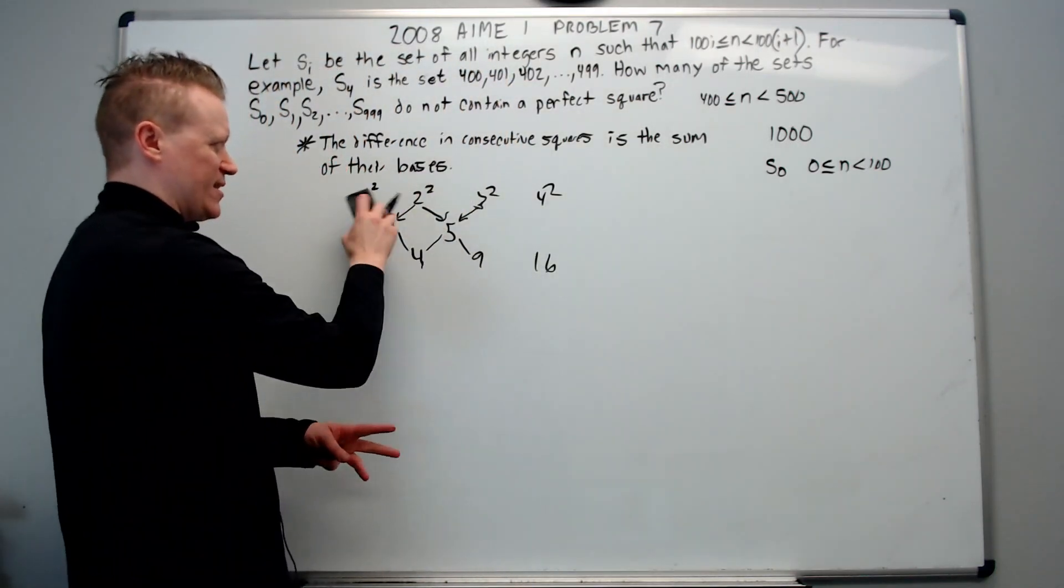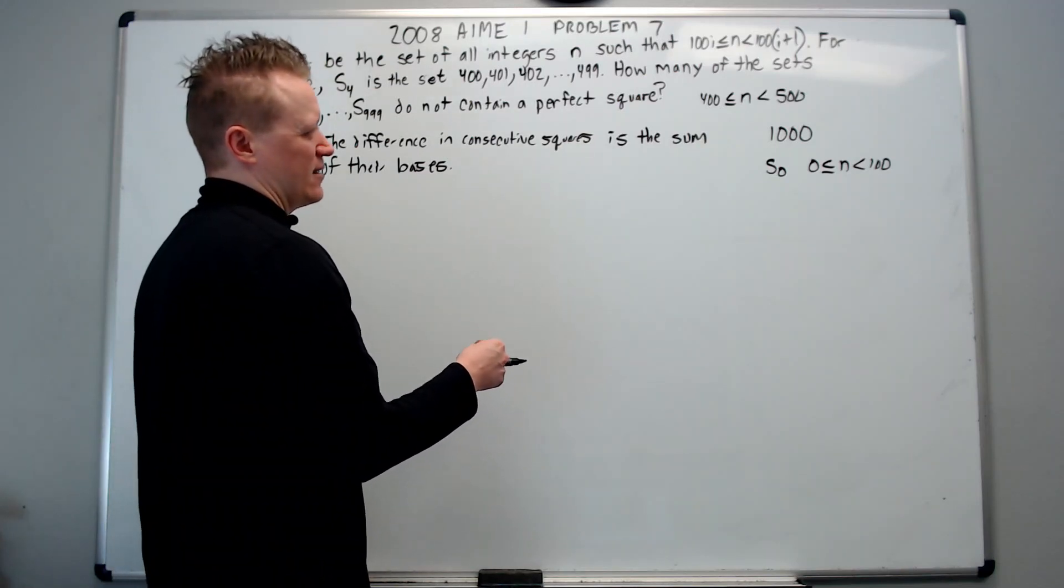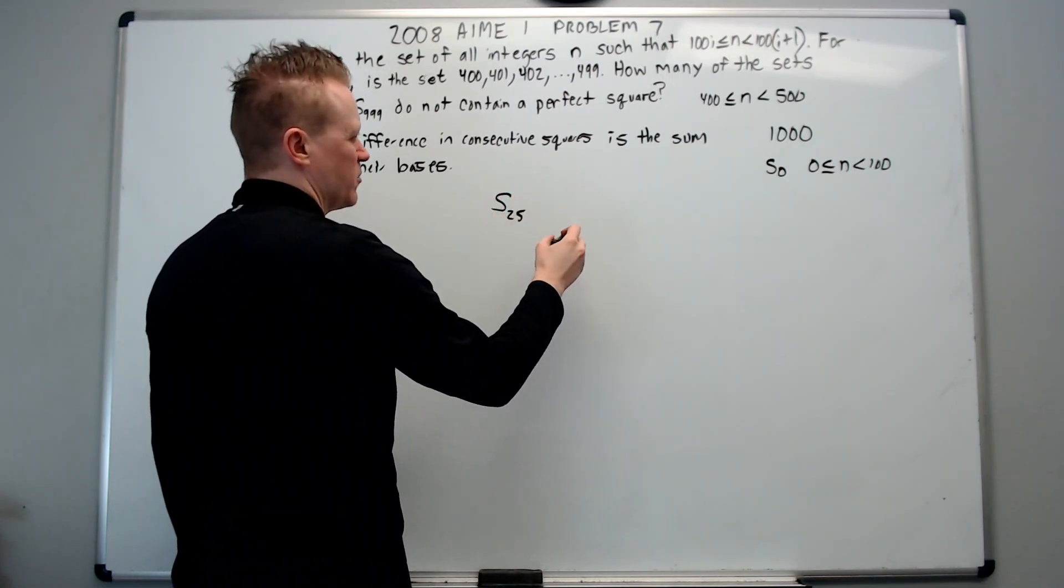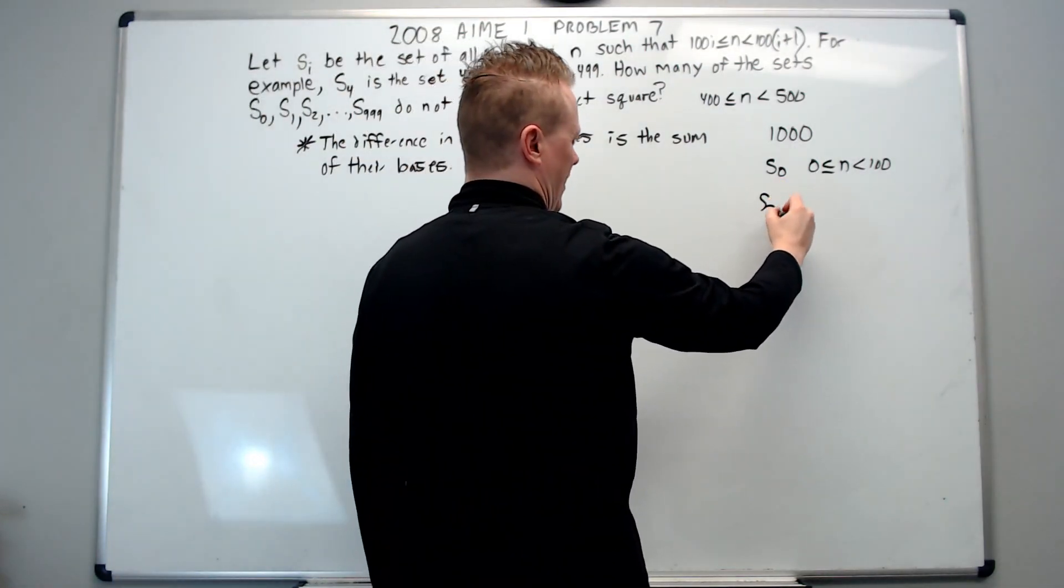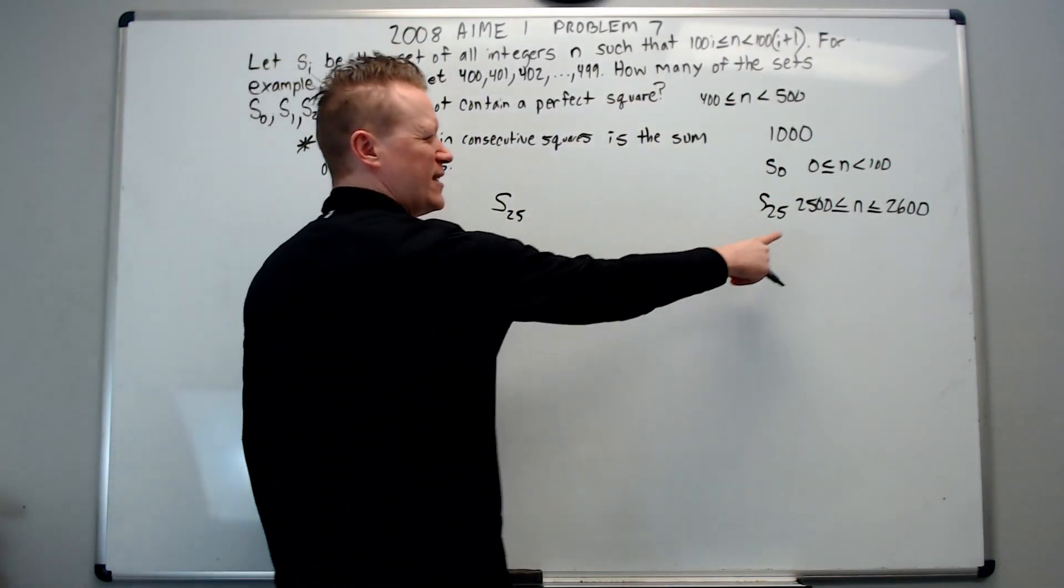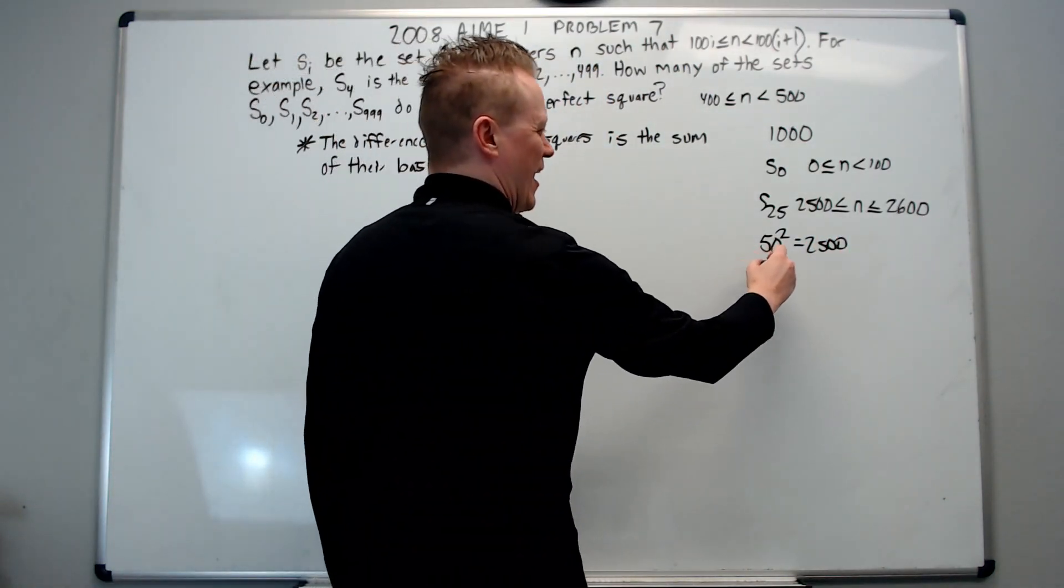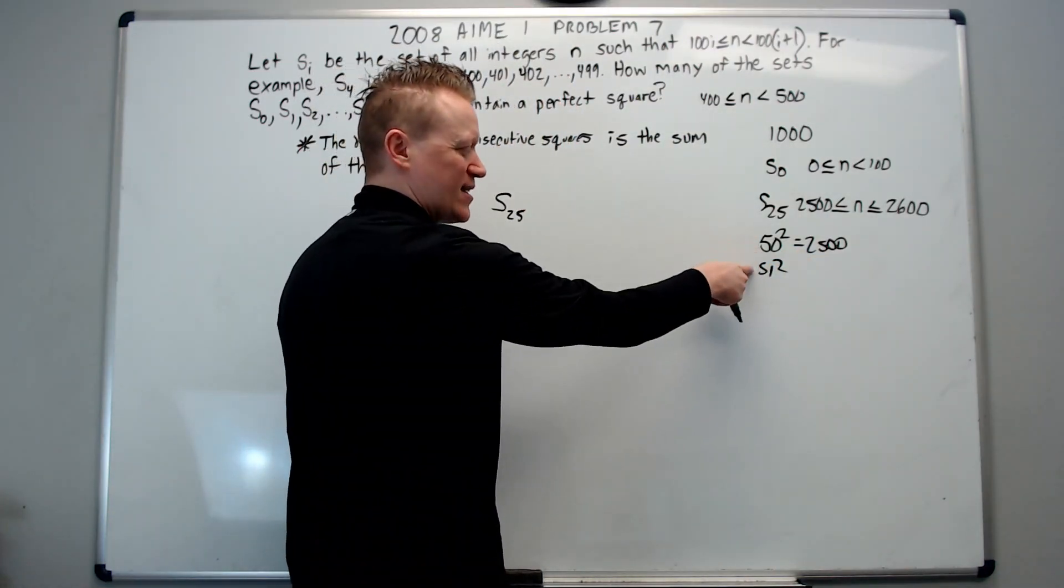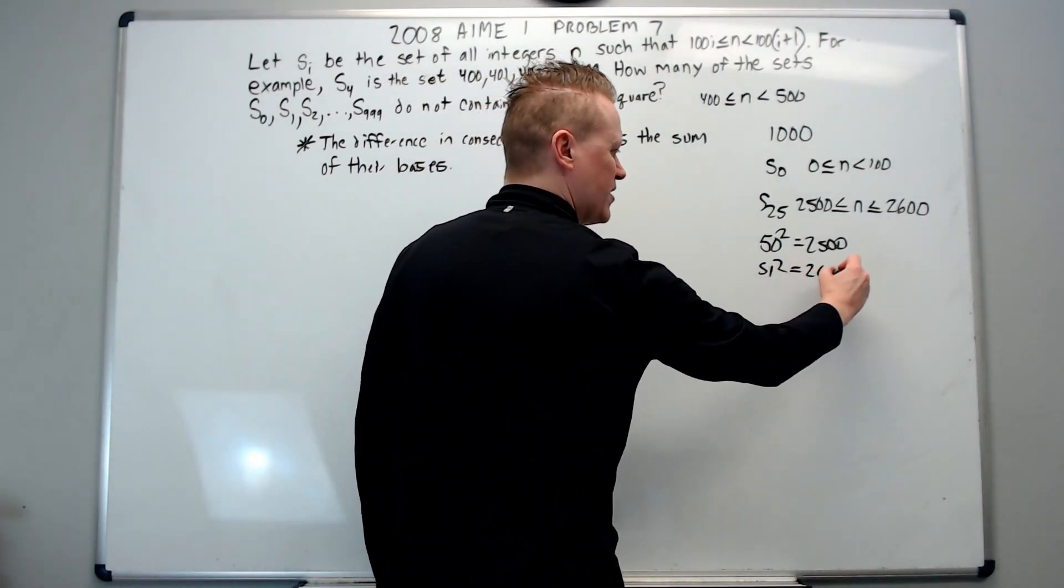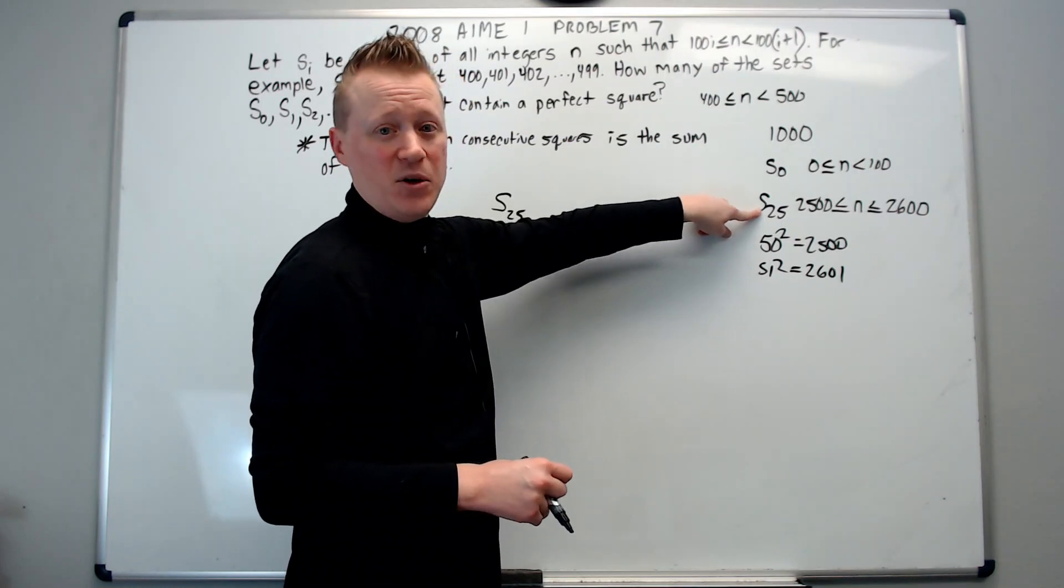So having accomplished this tactic or tool that we're going to use, how do we put it to use? Well, we can think that from S sub 25, this will be when we use this over here. S sub 25 will be 2,500 is less than or equal to N is less than or equal to 2,600. Well, 2,500 happens to be 50 squared. And the thing is, is that after the first 50 squares, the difference in the consecutive squares is going to be over 100. So 50 plus 51 is 101. Then therefore, this will be 2601. But you can see they fall in a different bracket, a different interval, if you will, 100 unit interval.